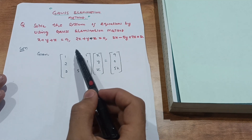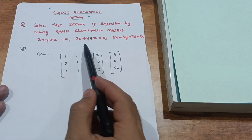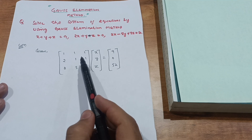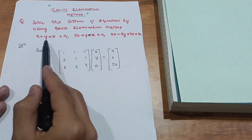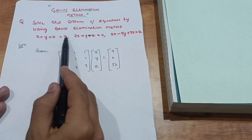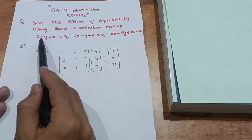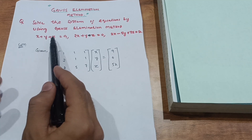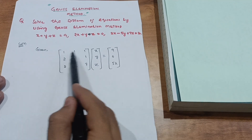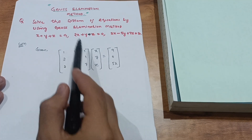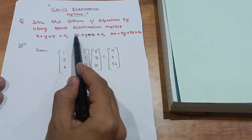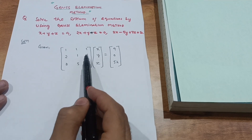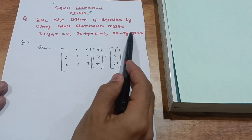Using Gauss elimination method means you first write the equations in the form of matrices — specifically, you make the augmented matrix. For the first equation, x plus y plus z equals 9, the coefficients are 1, 1, 1. For the second equation, 2x plus y minus z, the coefficients are 2, 1, minus 1.